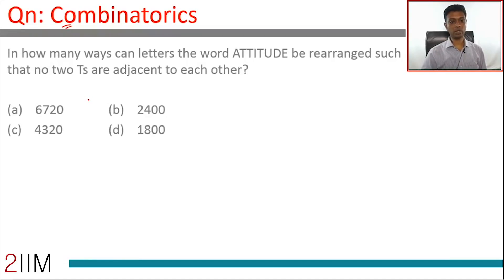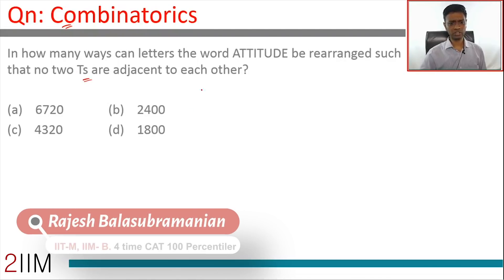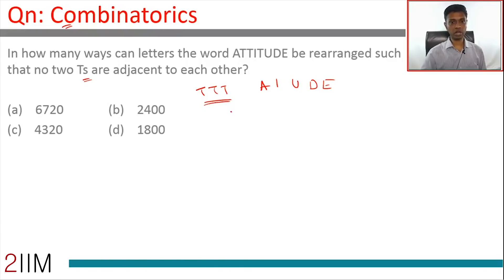In how many ways can letters of the word ATTITUDE be rearranged such that no two T's are adjacent to each other? This word has three T's, and then it has A, I, U, D, E. We should arrange it in such a way that no two T's are adjacent to each other. The starting point for this...